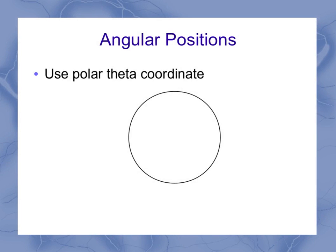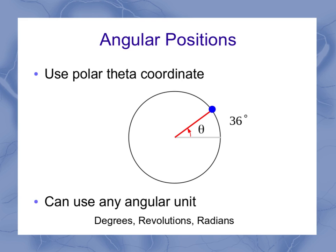When it comes to angular positions, we really want to use the polar theta coordinate. So if I've got an object somewhere on a circle, I can measure the angle theta. We typically measure that up from the positive x-axis. In this case, it's about 36 degrees. But remember, you can use any angular unit here: degrees, revolutions, or radians. We'll see examples of all of these in this presentation.